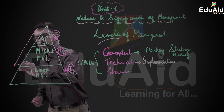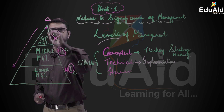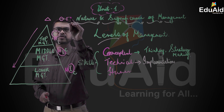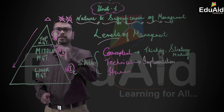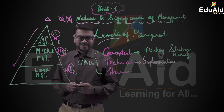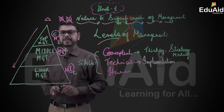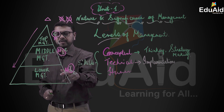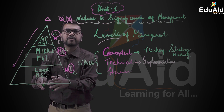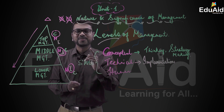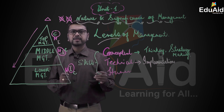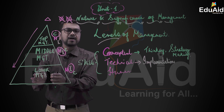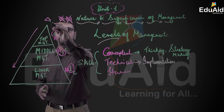This structure is in the form of a pyramid. Why a pyramid and not a circle or square? The flow of instructions is from top to bottom. This is called span of management — as you go down, the number of employees keeps on increasing, from the managing director downward. That is why it is represented in the form of a pyramid.